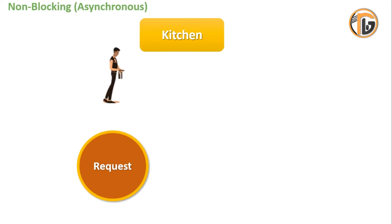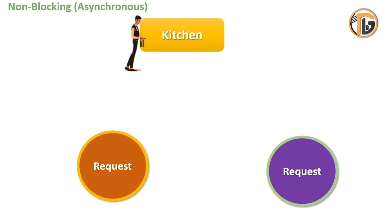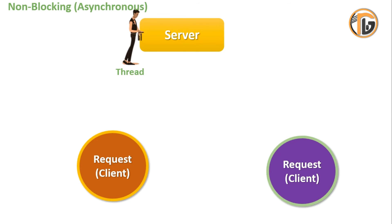Now we have requested multiple requests. In order to handle requests, we can process them concurrently. We have synchronized them with a new scenario: the kitchen is a server, we have a thread, and we have a request for each of these.